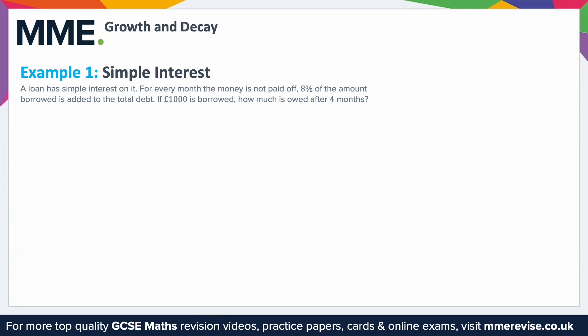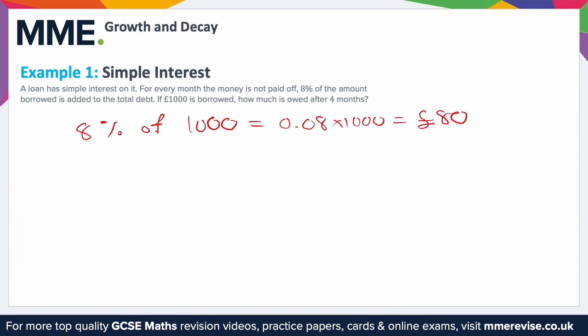The more intuitive way, if you're not sure of the equation, is to find eight percent of one thousand pounds. If you've got a calculator this is really easy; if not, you might want to do 0.08 times one thousand, which results in 80 pounds.